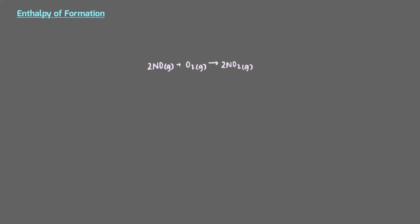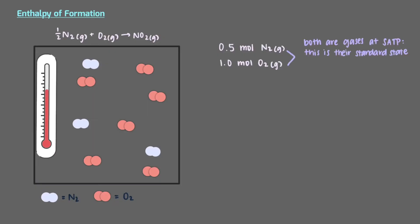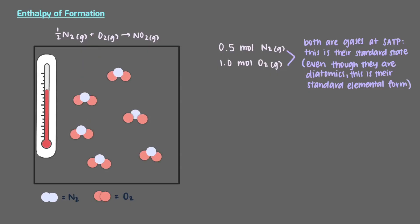In this video, we'll take a look at an approach for determining the molar enthalpy of reaction. Let's start by looking at the formation of nitrogen dioxide from elements in their standard states. Here's a container filled with 0.5 moles of nitrogen and 1 mole of oxygen gas. At SATP, both of these are gases — that is their standard state — and although they are diatomics, this is the standard elemental form of nitrogen and oxygen.